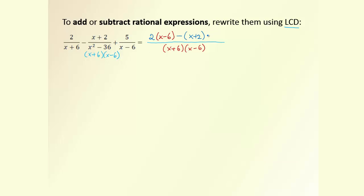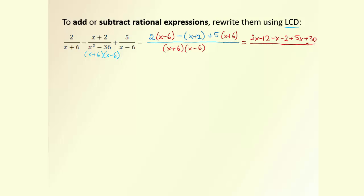For the following fraction with plus 5, we need to multiply by the missing bracket, which in this case is (x + 6). This is the important step to be careful with. The rest of the calculation is straightforward — we open brackets and collect like terms: 2x − 12 − x − 2 + 5x + 30, all over the common denominator (x + 6)(x − 6).